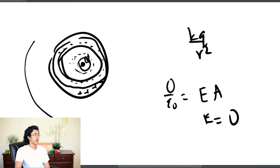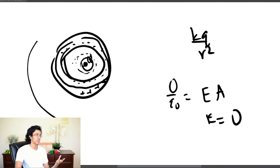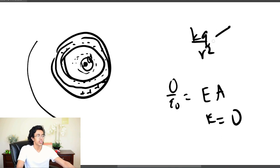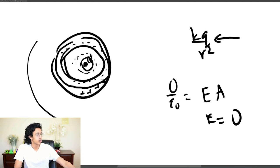Once you're outside the conducting sphere, the sphere is neutral so only the inner charge q contributes. You go back to the same equation: E equals KQ/R² outside. So: inside is KQ/R², within the conductor is zero, and outside it goes back to KQ/R². Epic.